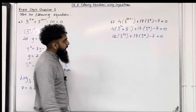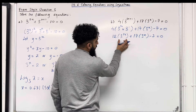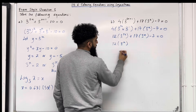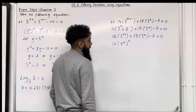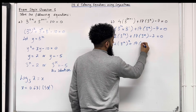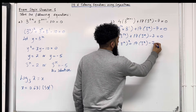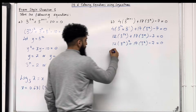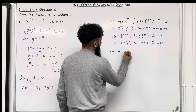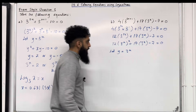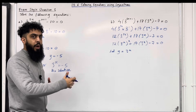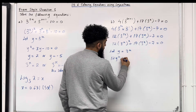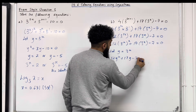Now I can rewrite this particular term. So I've got 12 times 3 to the power x in bracket to the power 2 plus 17 lots of 3 to the power x minus 7 equal 0. Now I'm going to let y equal 3 to the power x, and I can rewrite the equation in terms of y. So I've got 12y squared plus 17y minus 7 equal 0.